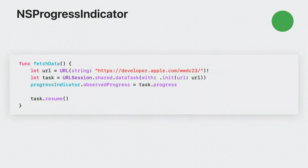The Progress type from Foundation represents work your application performs. You may be using this in your apps to represent a download in progress or images being processed. In macOS Sonoma, you can now use the Progress type from Foundation with NSProgressIndicator. Assign the progress to the new observedProgress property, and the progress indicator will automatically update its value as the progress changes, even on background threads.